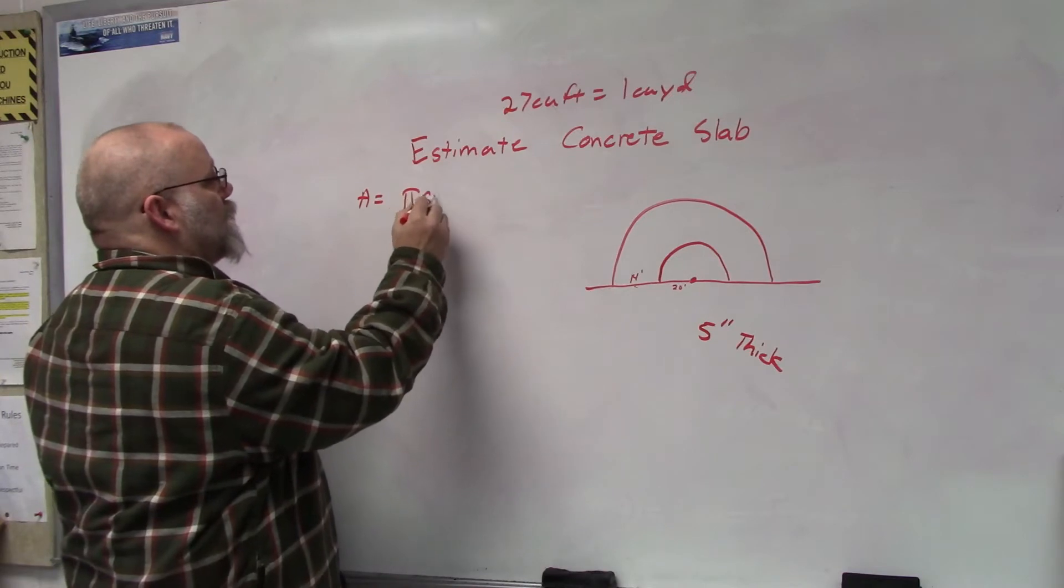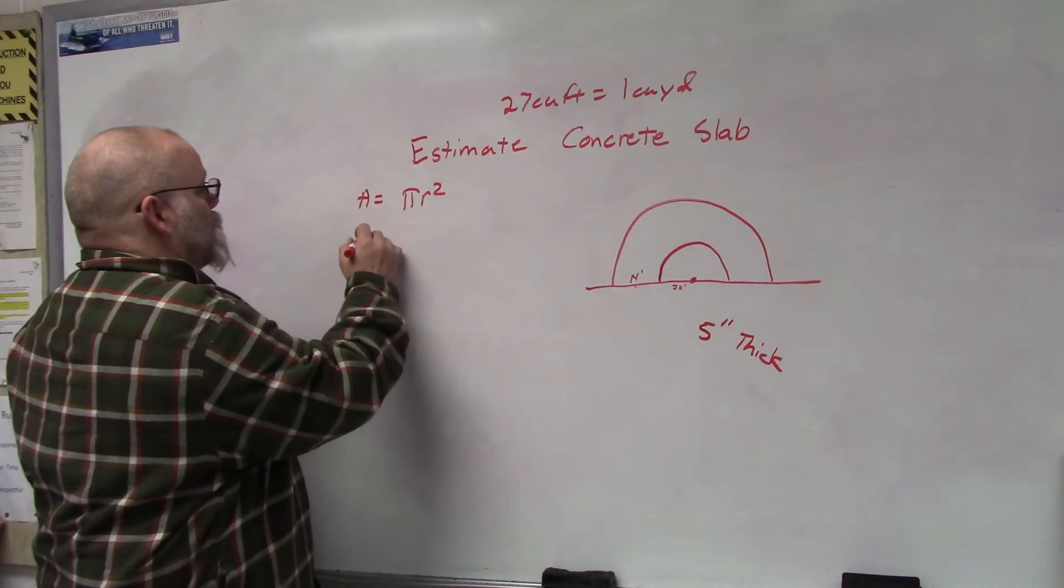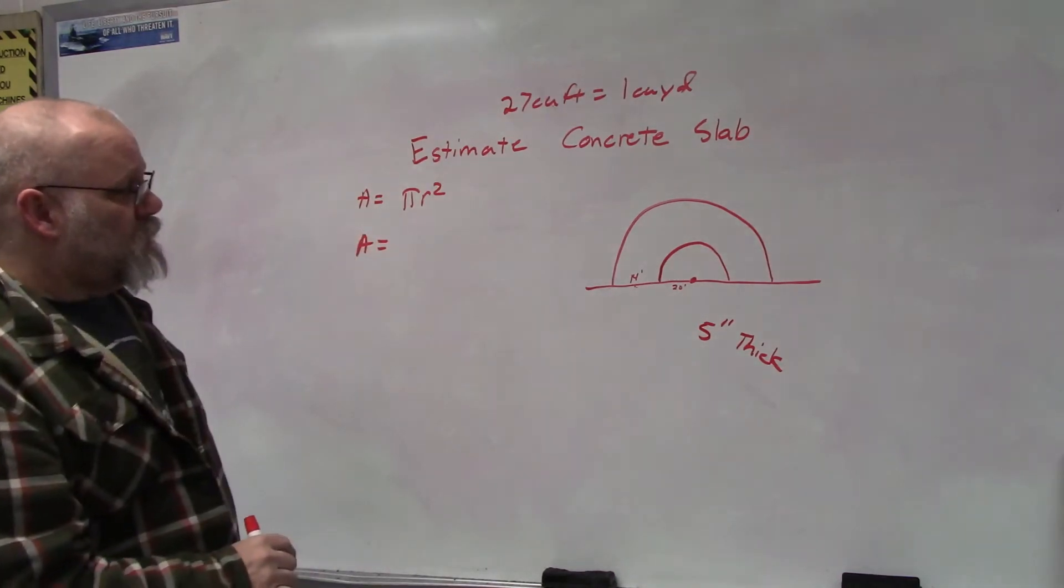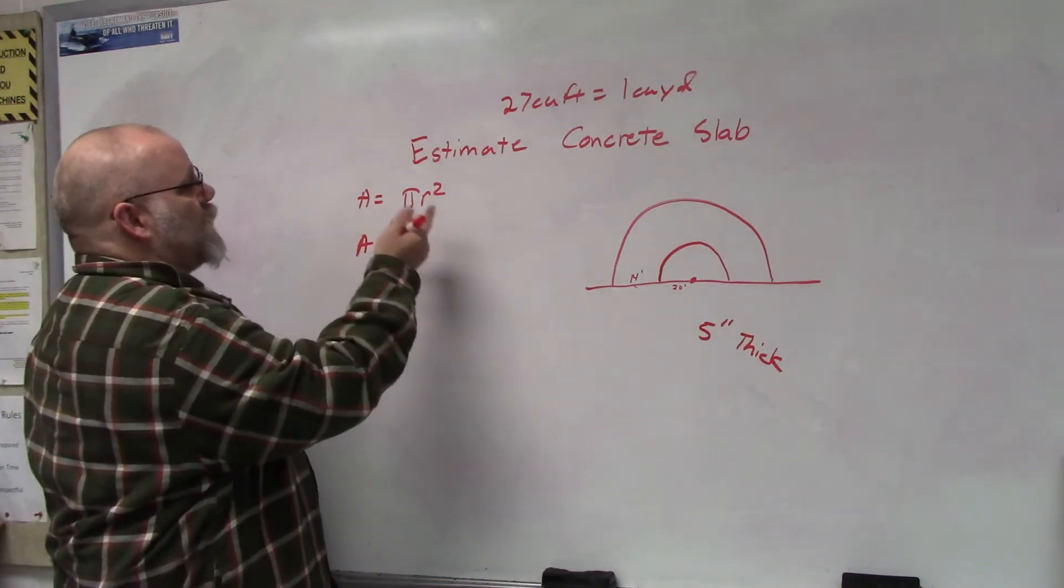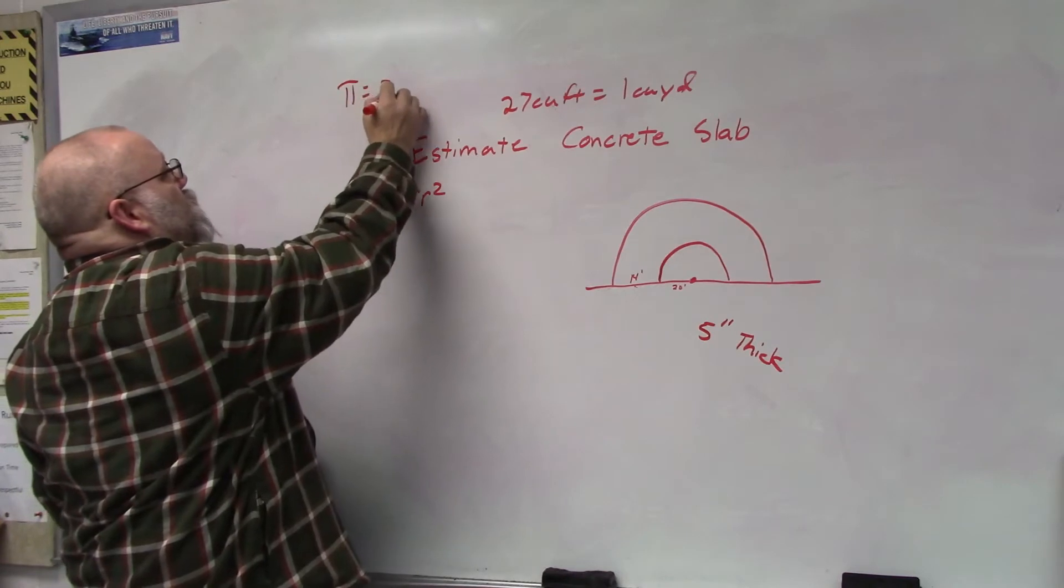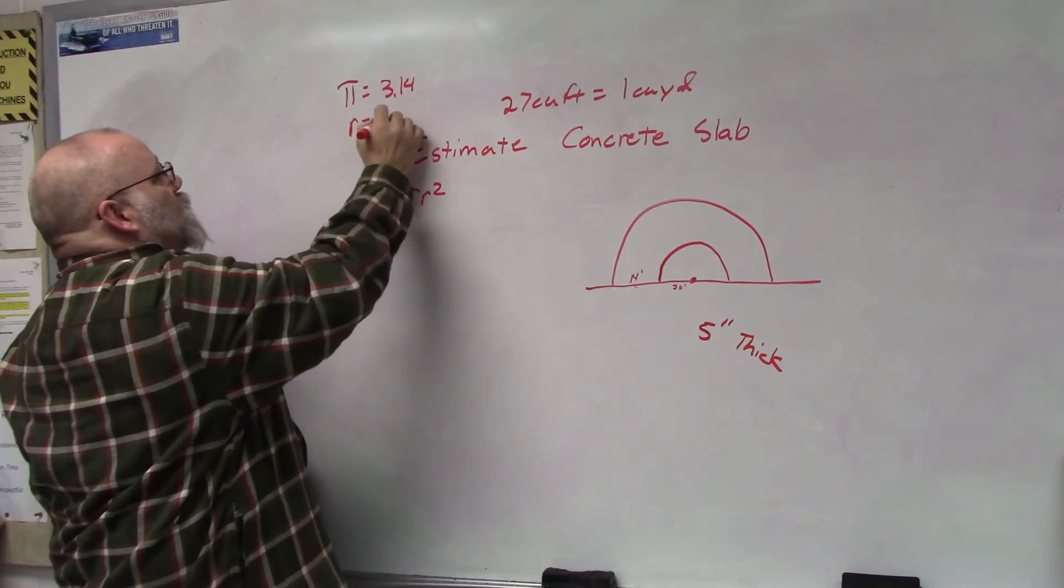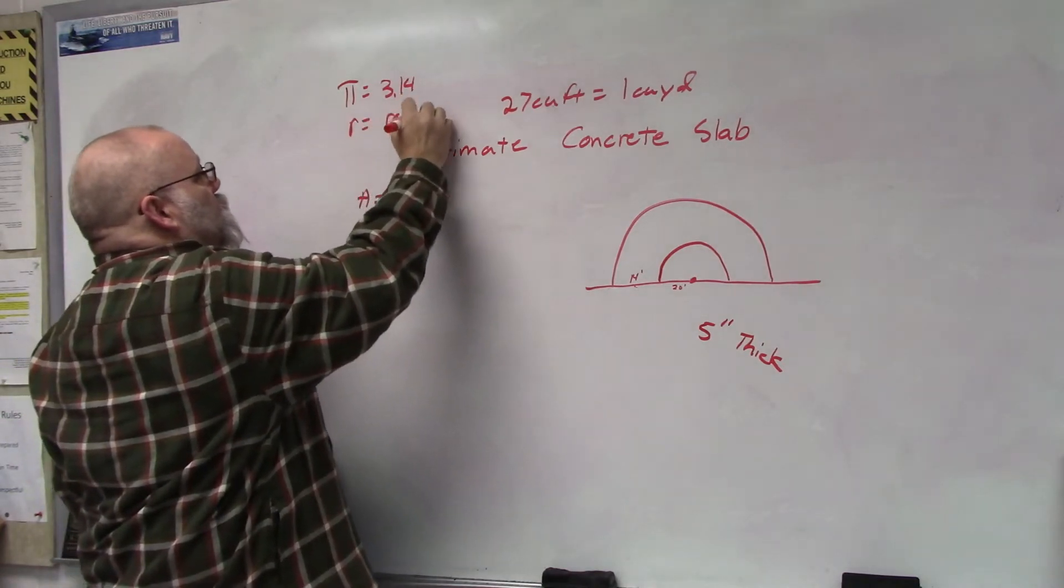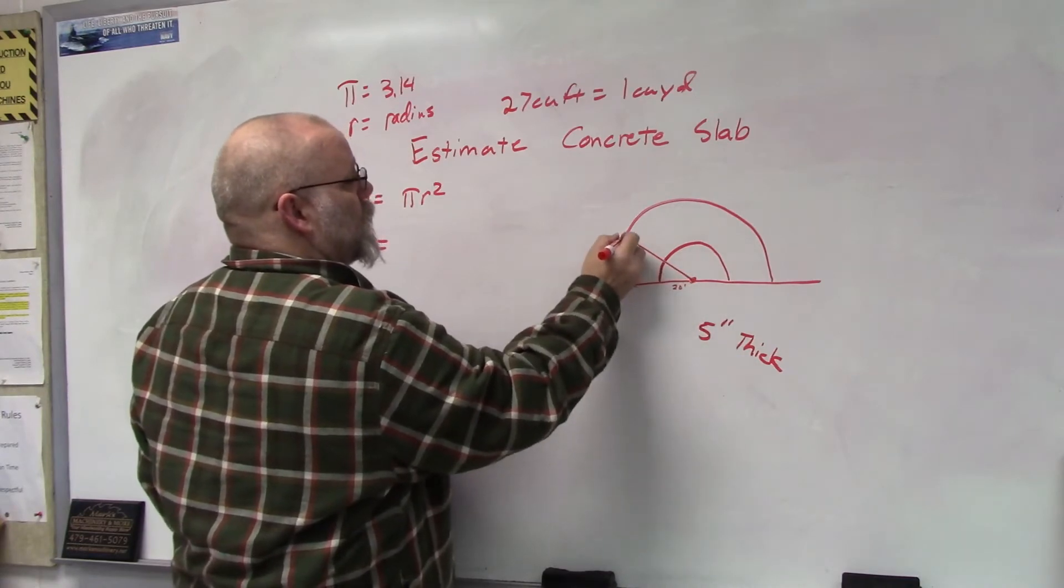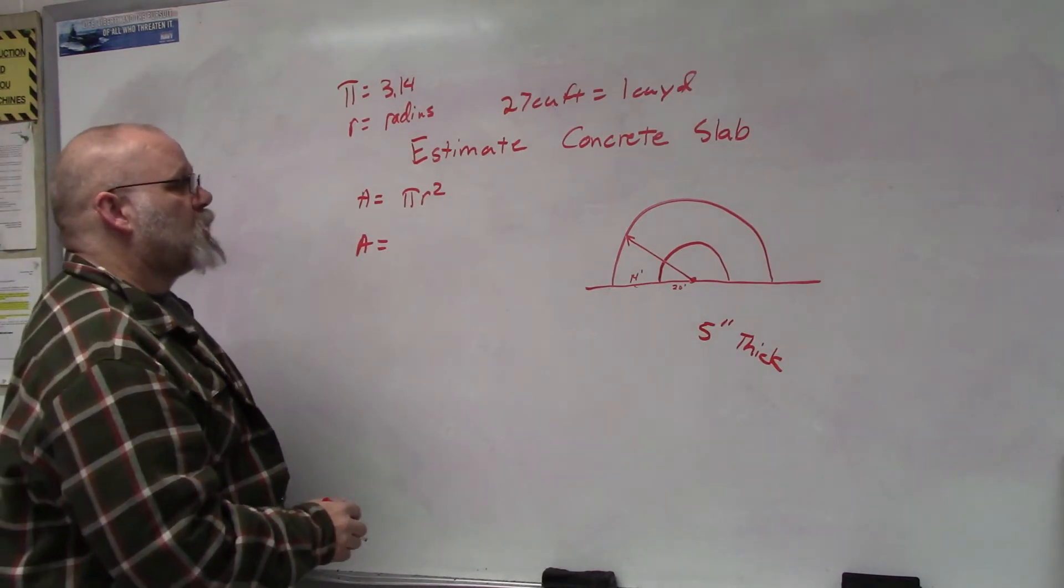What does this mean? π is a given, so π equals 3.14, and r stands for the radius. The radius is the distance from the exact center to the outside edge.